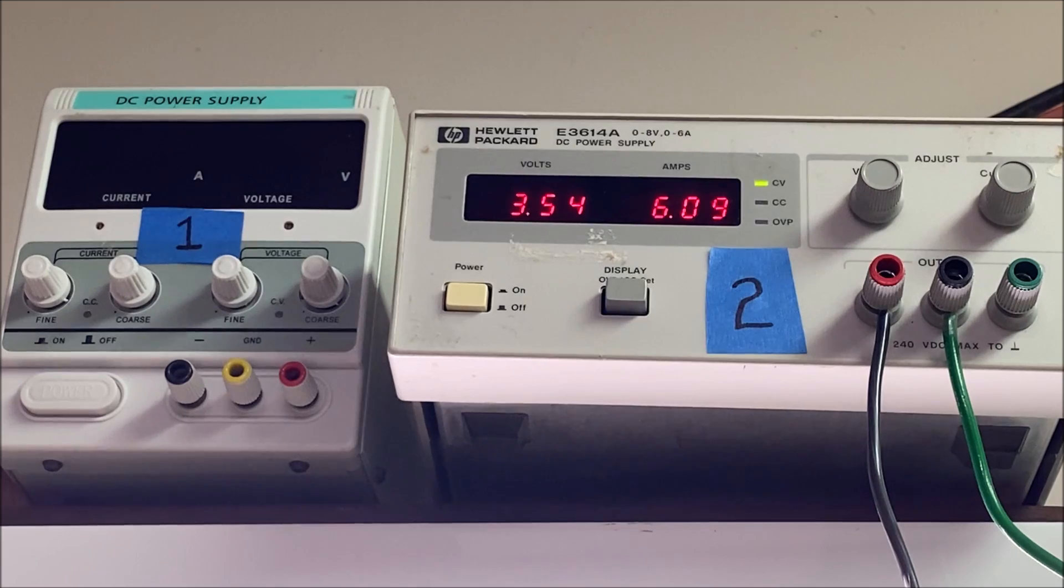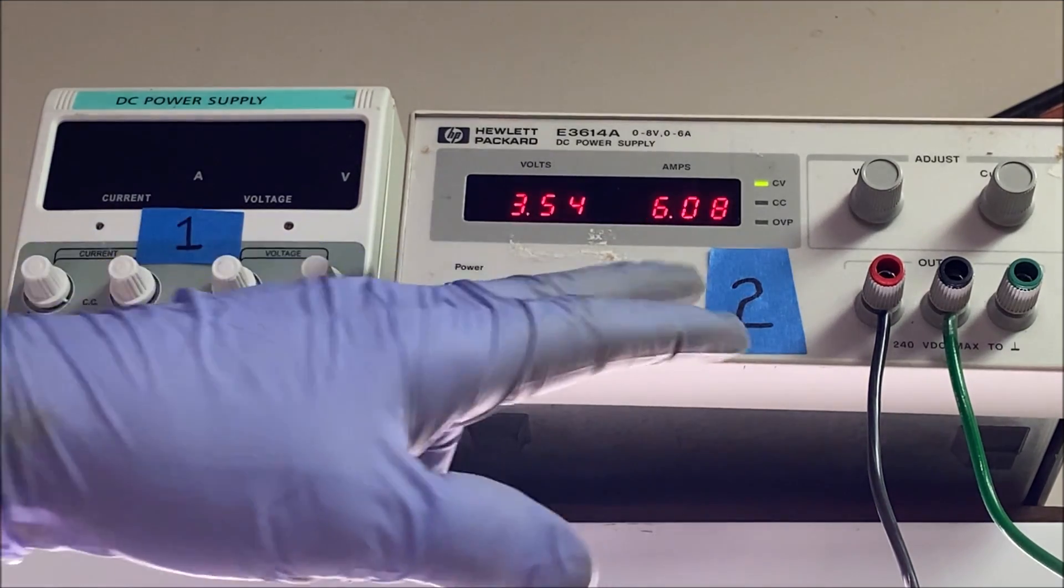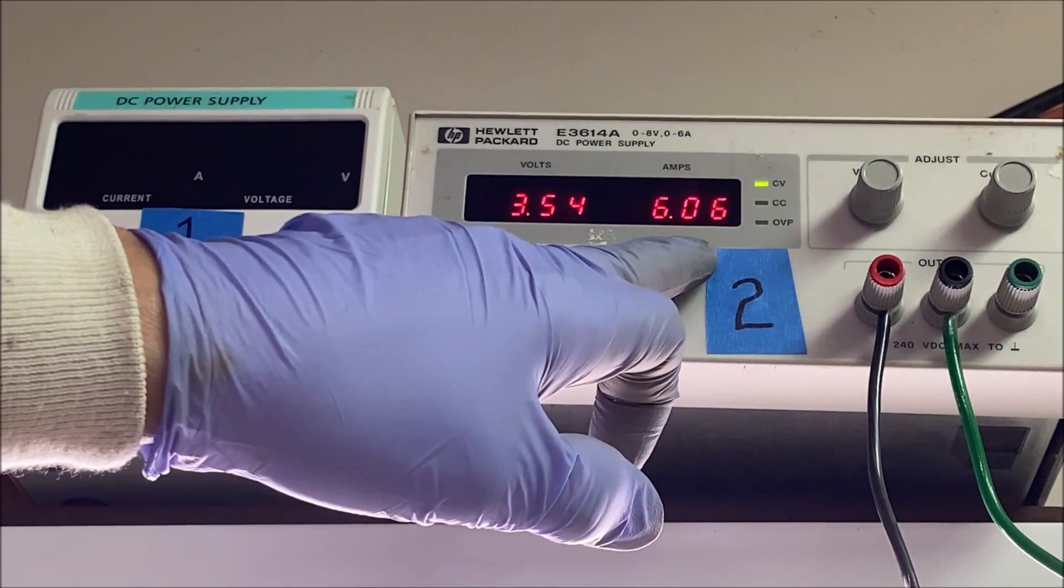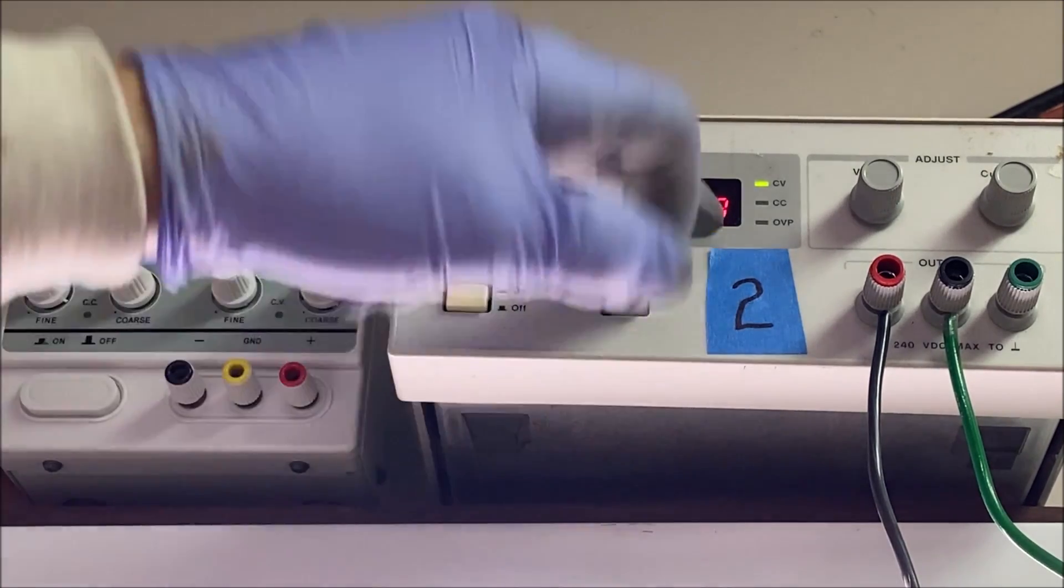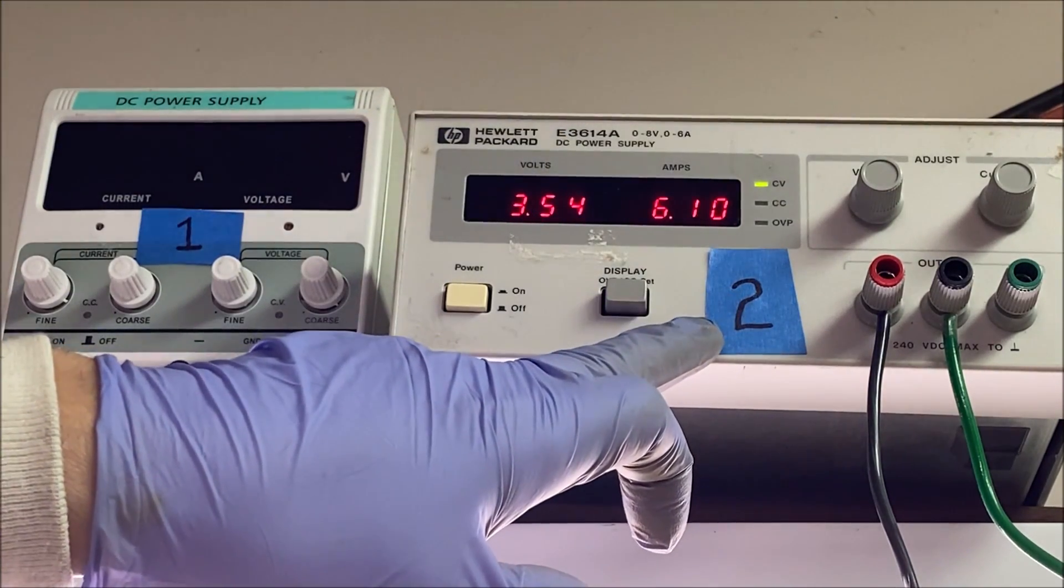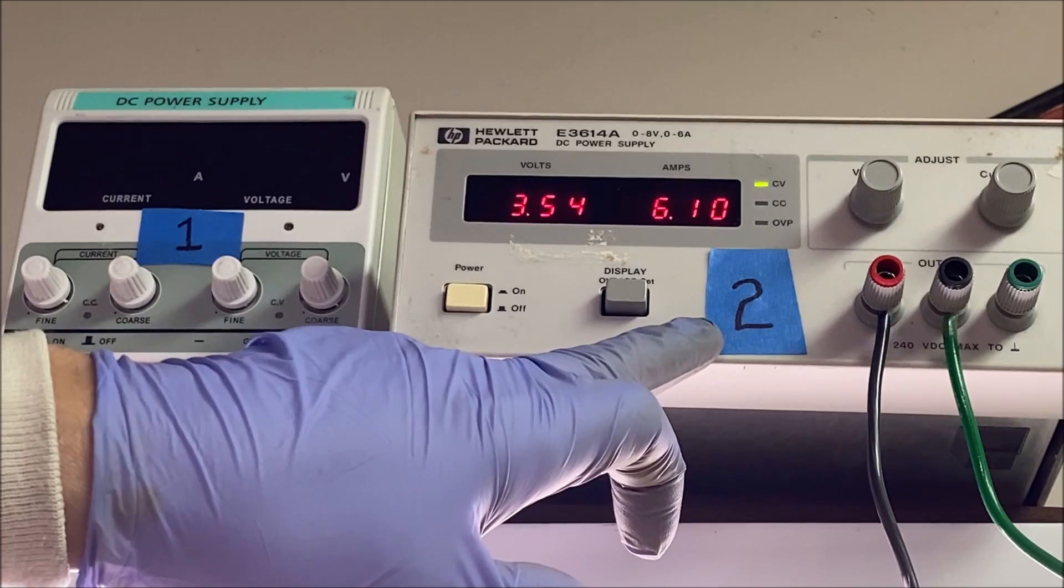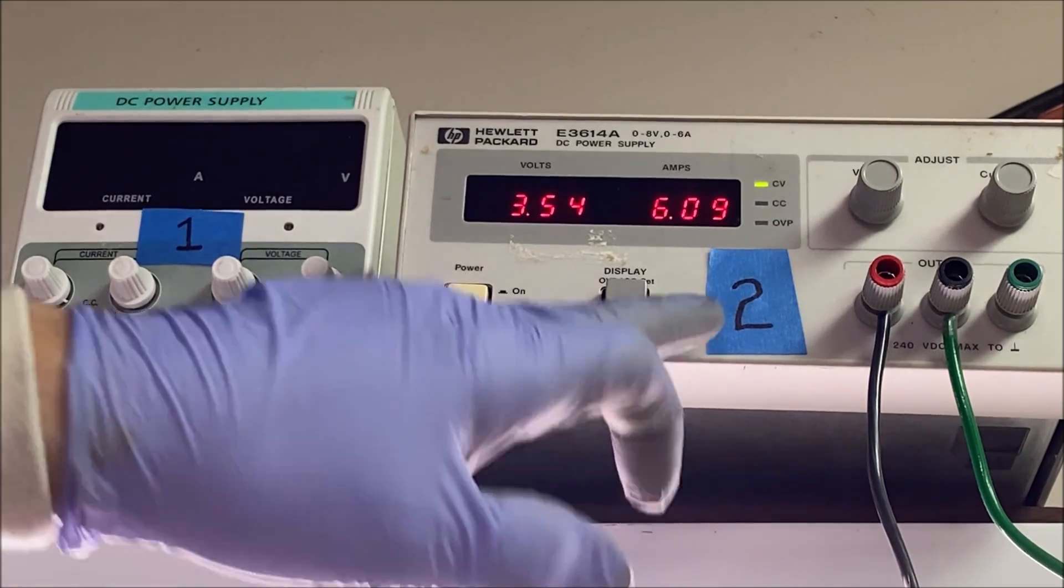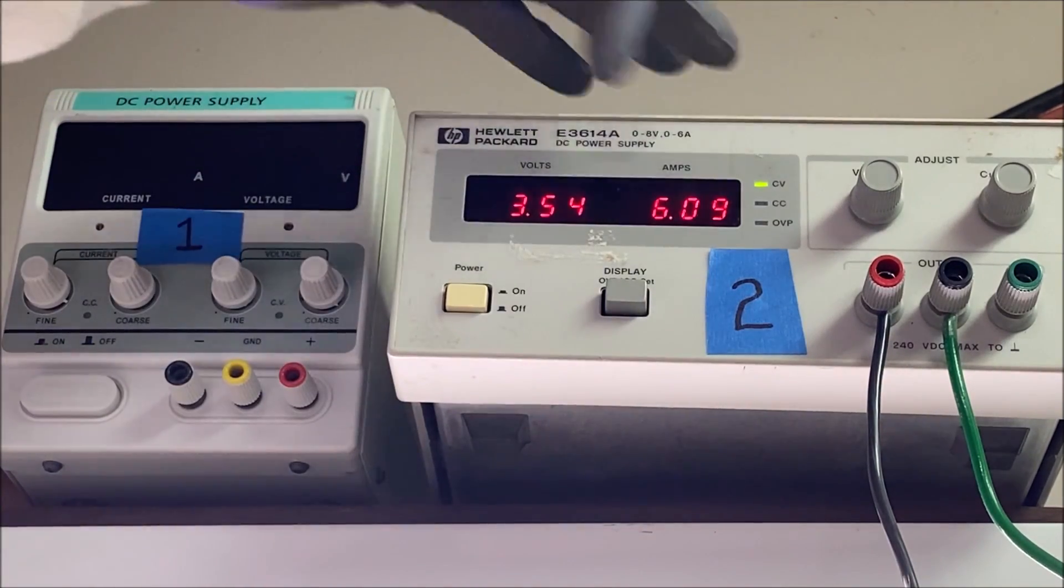The six liter cell has been running for about an hour and a half now. You can see the amps are up over six, so what we're going to do is adjust this voltage down. The max amperage on this power supply is six amps, so I'm going to try to pull the amps down by adjusting the voltage down a little bit.